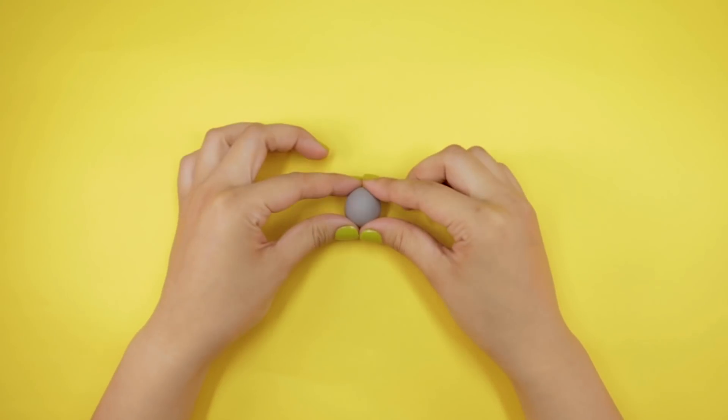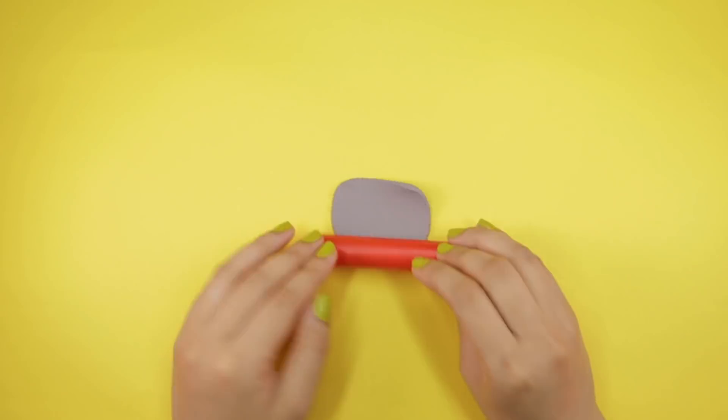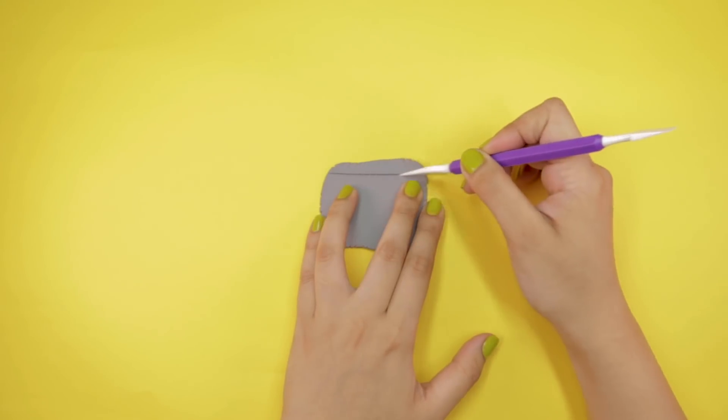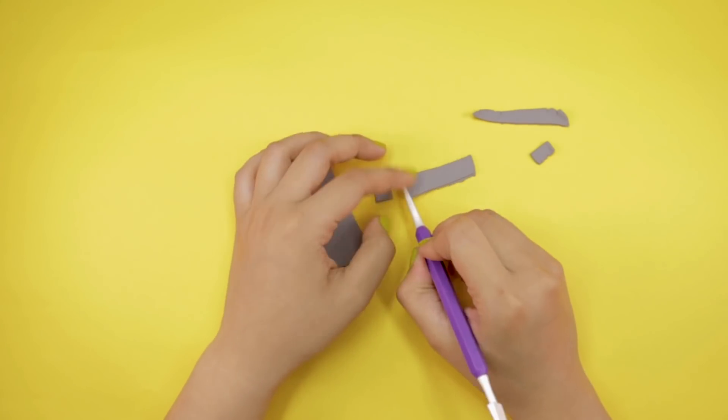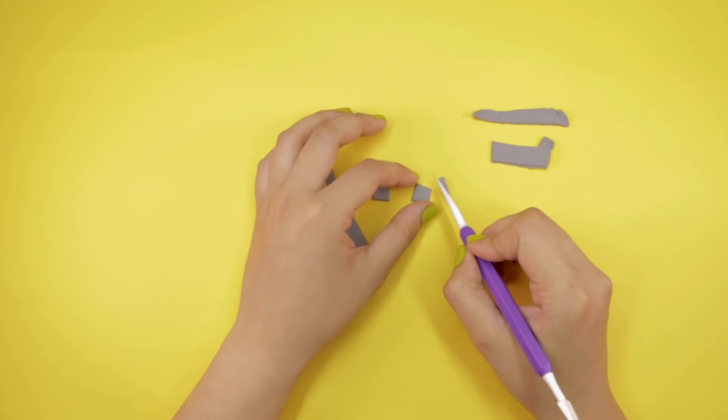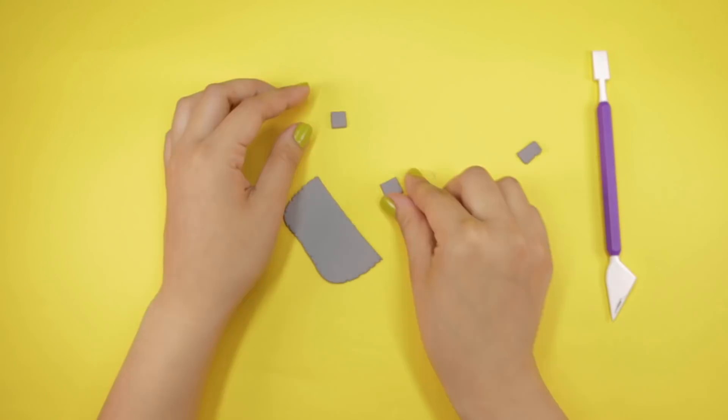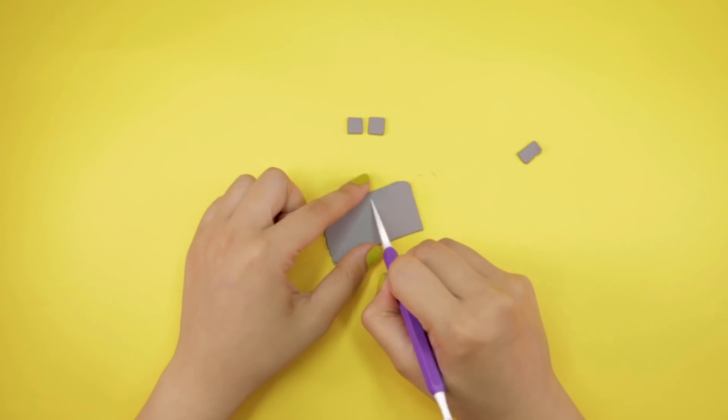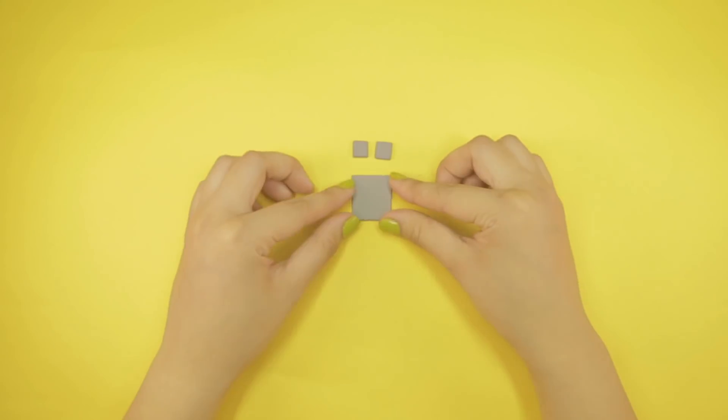Get more gray clay and flatten it using a rolling pin. Make it as thin as possible. Now grab your plastic knife. Cut two small gray squares, which you'll use as the eyes of your robot. Then cut one square for the body of the robot. This will be used as a design asset to make the robot look more cool.